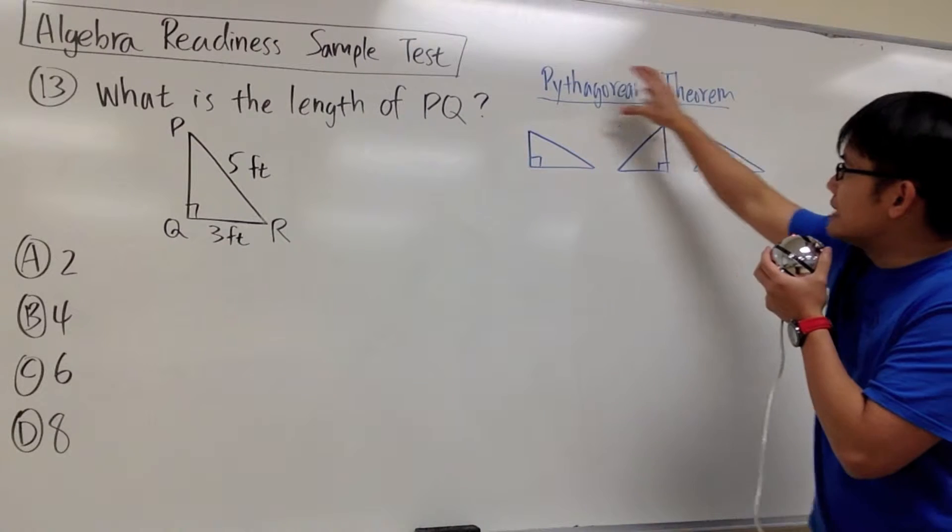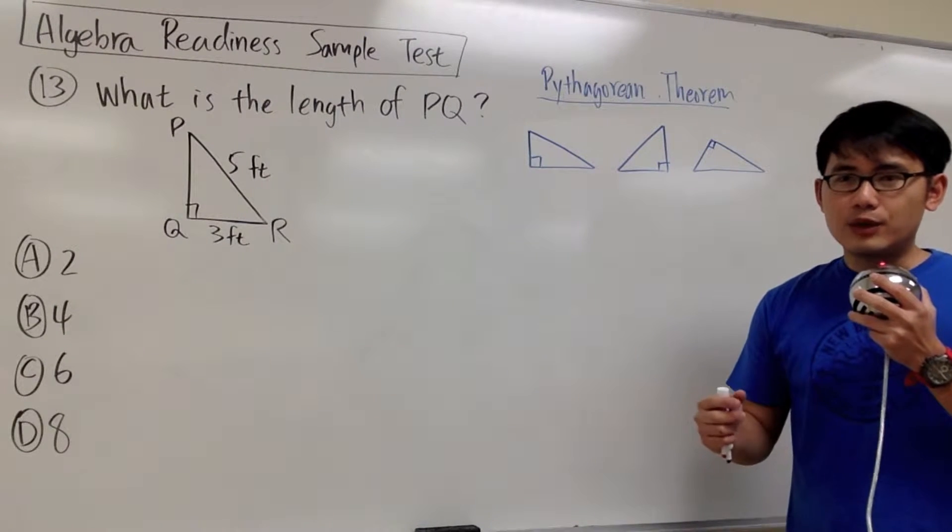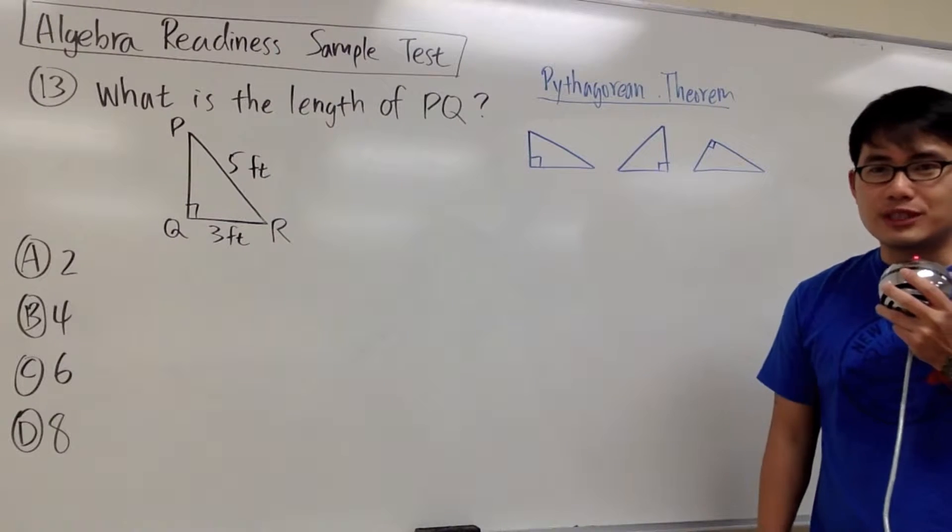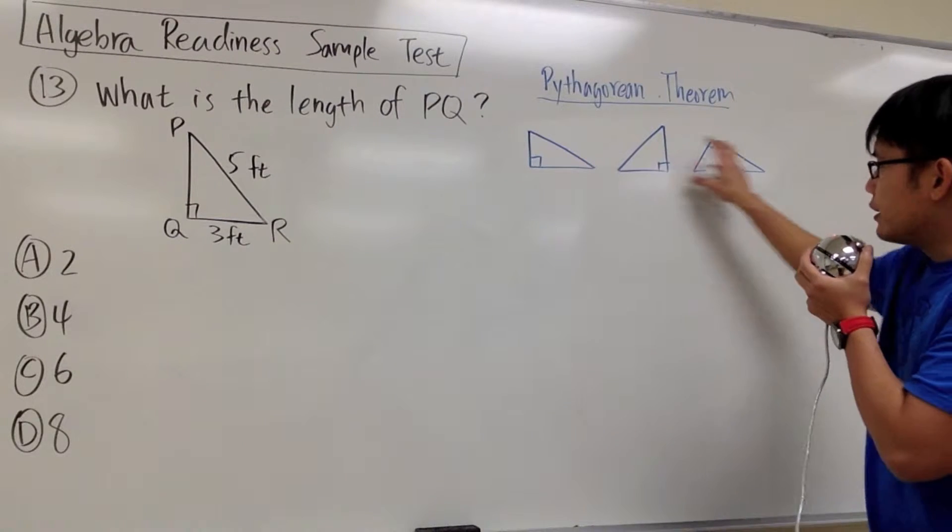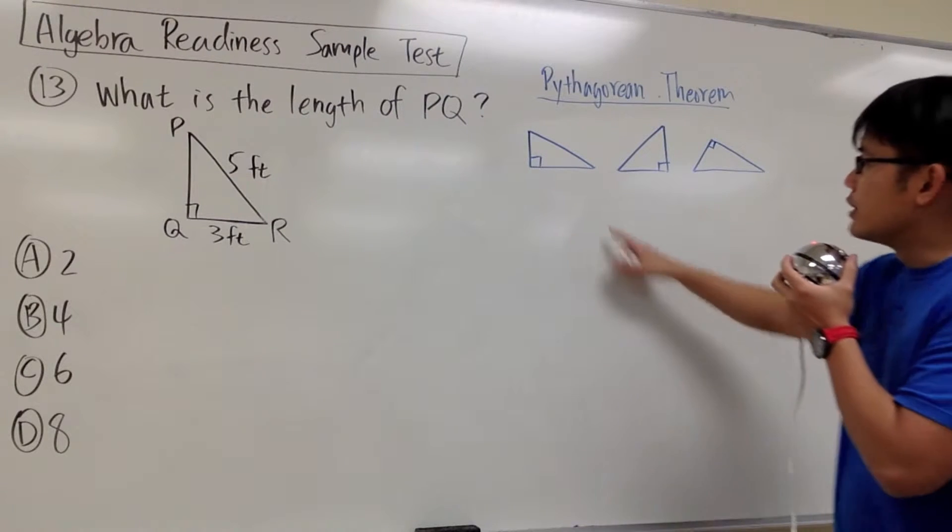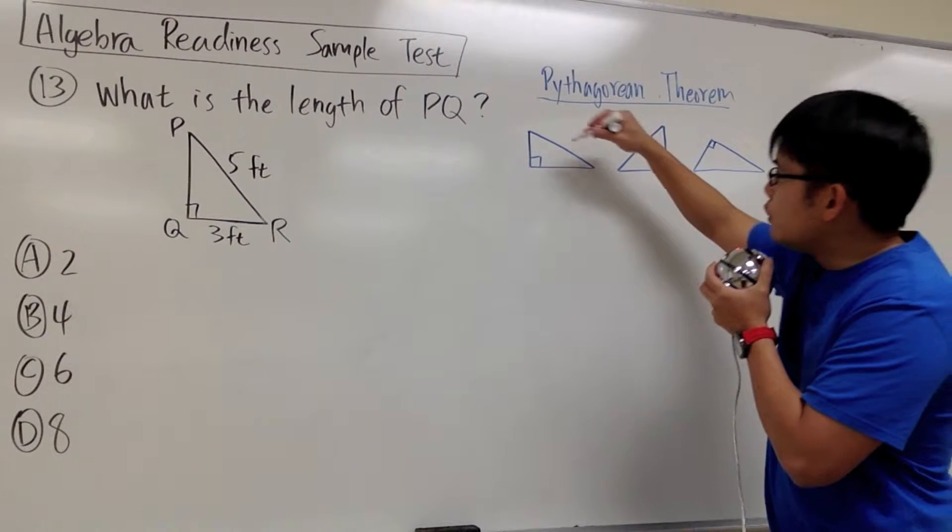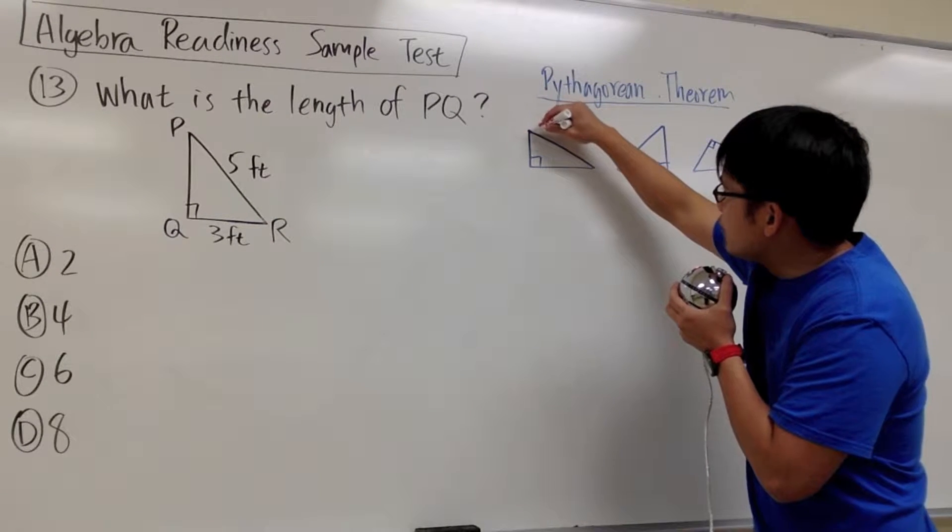We can only use Pythagorean theorem on right triangles. This is how I will demonstrate how to use the Pythagorean theorem. For all the right triangles, it doesn't really matter how you draw them, they will always have a longer side. For example, the first one, the longer side is right here. I'm just going to focus on that first, I will color this in red.